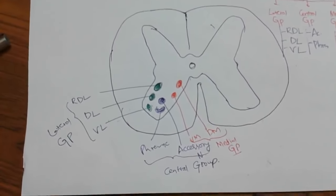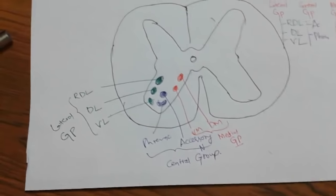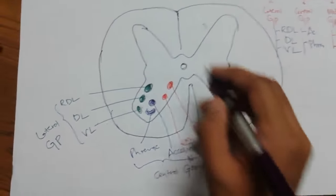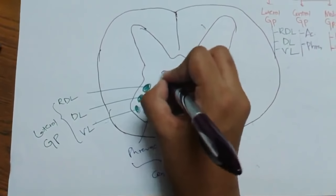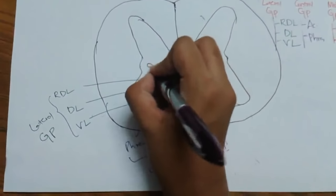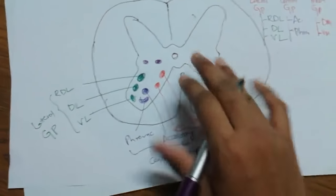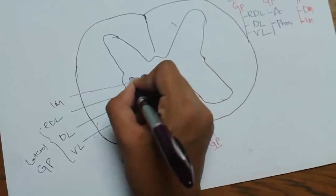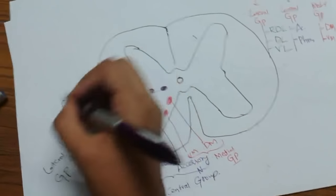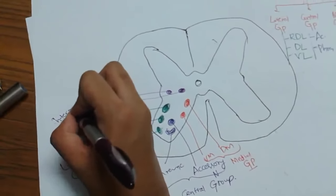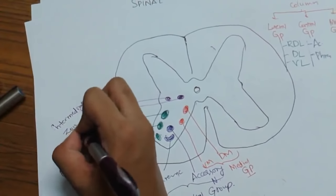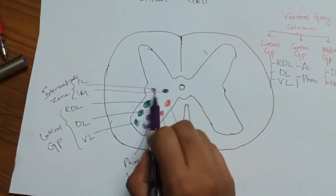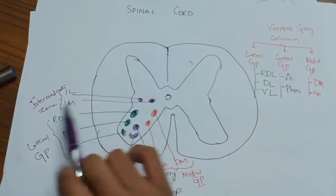Next is the intermediate group. The intermediate group has two nuclei: intermediomedial and intermediolateral. Both belong to the intermediate zone.